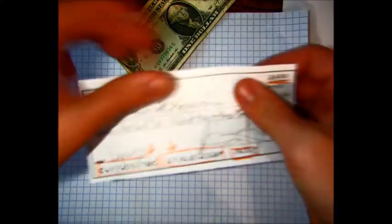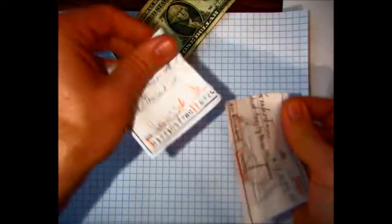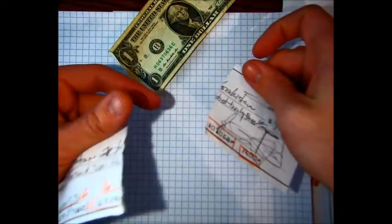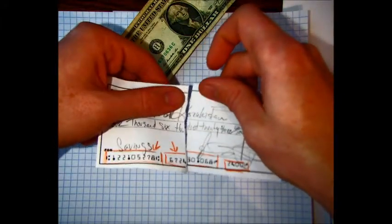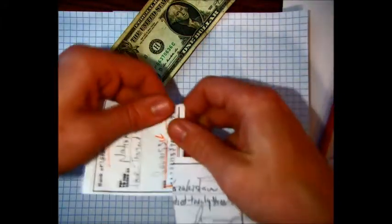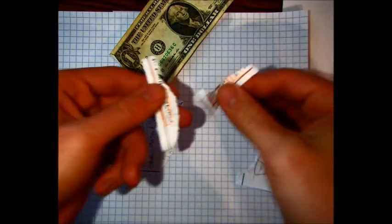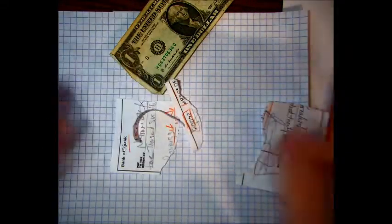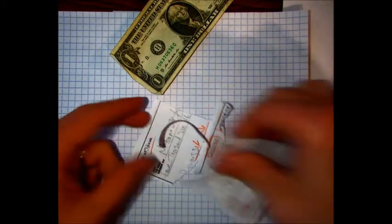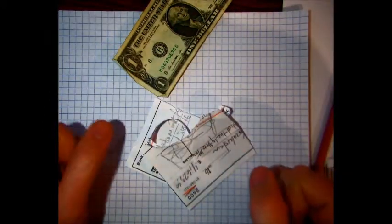Whenever you're done with a check, instead of just ripping it in half and, you know, having this stuff floating around, instead, because it doesn't take much to stitch that together, instead, really, you want to shred these numbers. The numbers are the important stuff, right? If I'm trying to get into your account, this is what I'm getting at. So, make sure to always shred any financial documents that you have. That's a good tip for you.